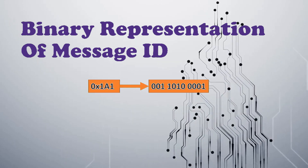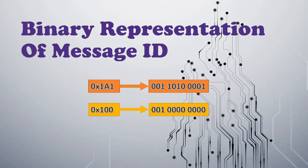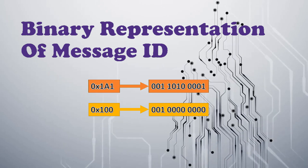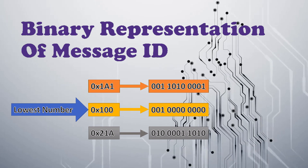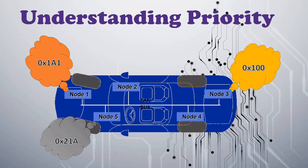0x1a1 can be represented as 0011010 0001, 0x100 is 00100000000, and 0x21a1 can be represented as 0100001 1010. We will take standard CAN so that the message ID is 11 bits. Here 0x100 is the lowest message ID, so this one will have the highest priority. Therefore, node 3's message with message ID 0x100 will have the highest priority.